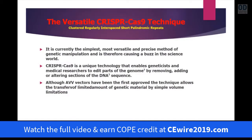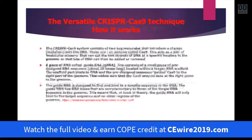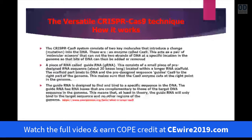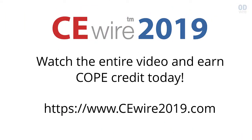Perhaps the most elegant tool we now use is the CRISPR-Cas9 technique. It's currently the simplest and most versatile, and can do many things in terms of changing the genome. It's a unique technology that enables geneticists and medical researchers to edit parts of genes by adding, removing, or altering sections — basically a clip-and-paste method. While the AAV vector allows transfer of a limited amount of genetic information, CRISPR-Cas9 actually changes the genetic code in a much more versatile way and can handle a lot more genetic manipulation and therapy. CRISPR consists of two molecules that introduce a change in DNA: the first is the Cas9, which acts as a molecular scissor, cutting the DNA at specific locations.